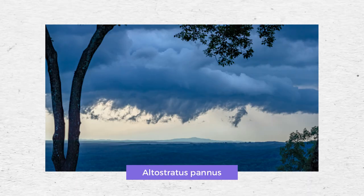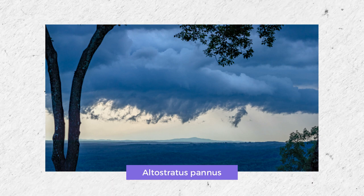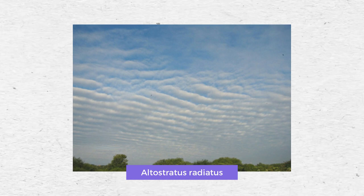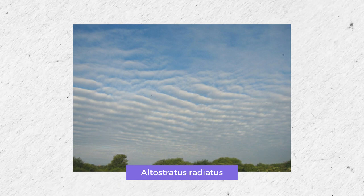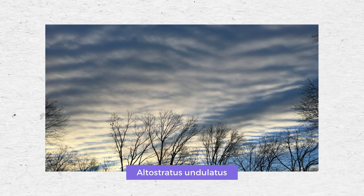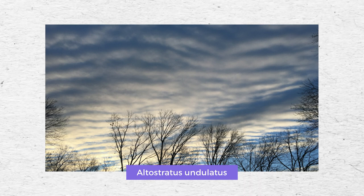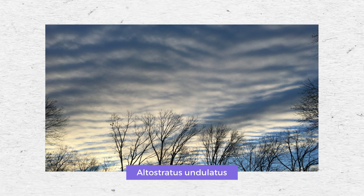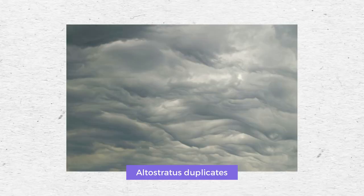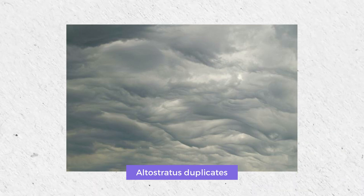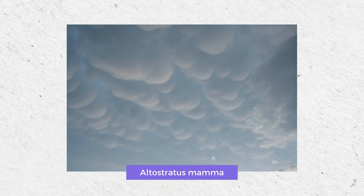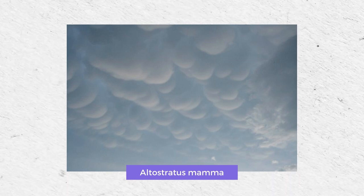Altostratus pannus has disorganized layers and appears shredded and ripped. Altostratus radiatus is formed by cloud bands parallel to each other, pointing towards the horizon. Altostratus undulatus is a thin layer of mist that mimics waves — undulatus means waved. Altostratus duplicatus is formed by many layers of altostratus clouds stacked on top of each other. Altostratus mamma is a rare species of cloud that resembles mammary glands.